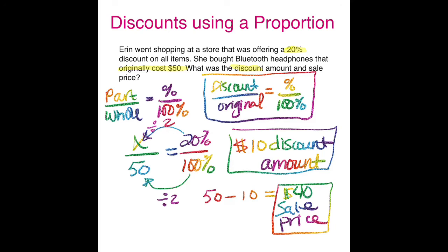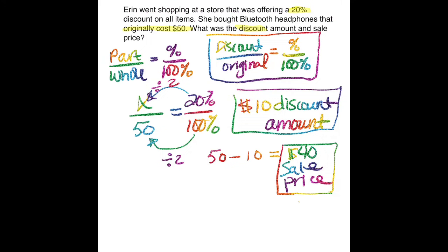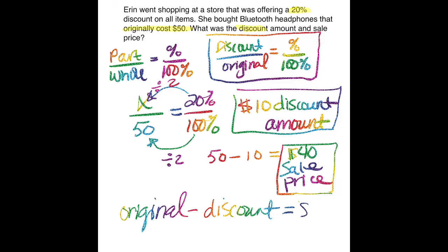So let me summarize the takeaways. First, I used a proportion to find the discount amount. Then I used this number sentence: original minus discount equals sale price. And that is how you use a proportion to find the discount amount and sale price.